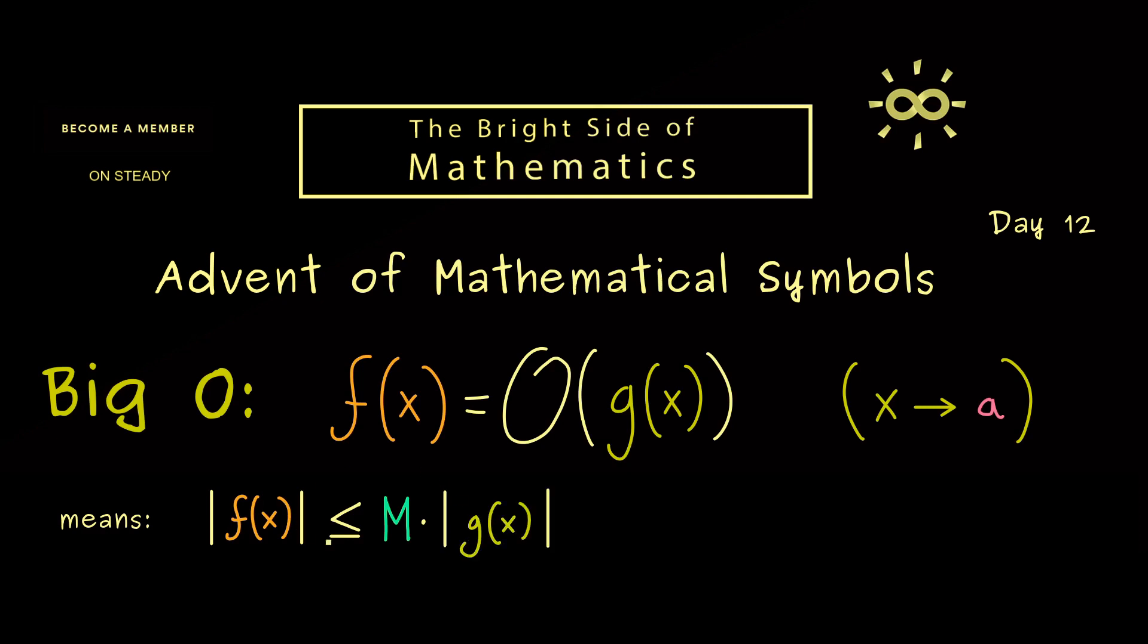And indeed this should hold for all points x in a neighborhood around a. In the case that a is infinity, this means that we have a bound such that all points x above this bound satisfy this inequality.